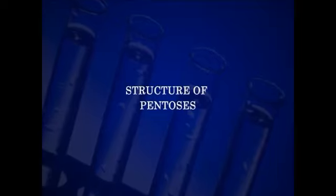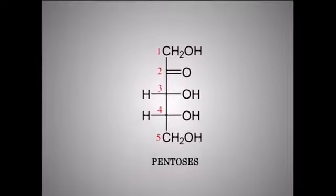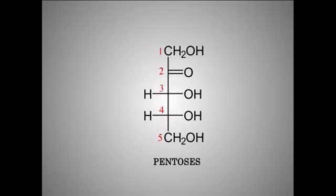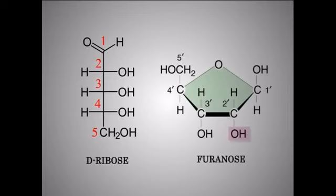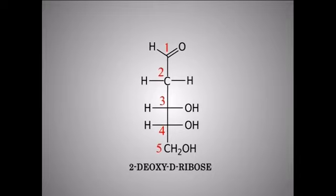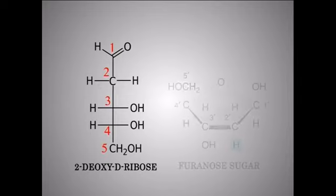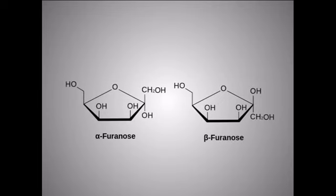Structure of pentoses. Pentoses contain five carbon atoms in the molecule. The ubiquitous pentose, a component of ribonucleic acid, exists as a furanose. 2-deoxyribose, a component of deoxyribonucleic acid, is also a furanose sugar. Both alpha and beta isomers can exist in solution, but the beta isomer is the one found in the nucleic acids.